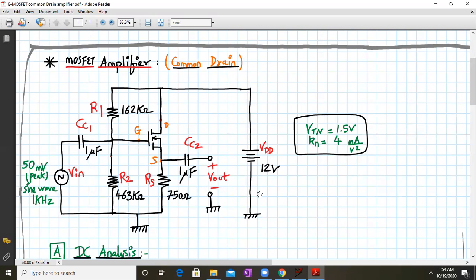It behaves as a voltage buffer configuration with Rd equal to zero. The R1, R2, and Rs values are given, coupling capacitor values are provided, and the MOSFET parameters are Vtn = 1.5 volts and Kn = 4 milliamperes per volt squared. We apply an input of 50 millivolt peak sine wave at 1 kilohertz frequency.